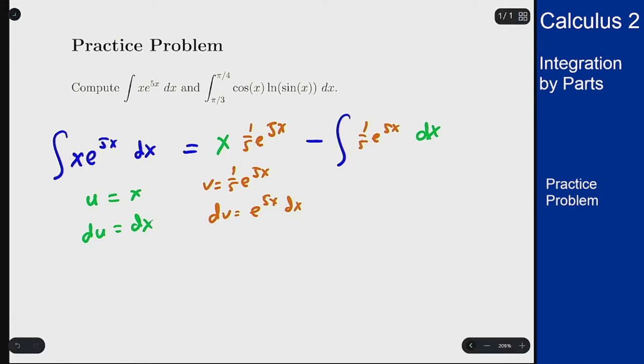So what I'll get out of this is x over 5 e to the 5x minus 1 over 25 e to the 5x. That will get the 1 fifth here and one more from the integration and then plus c. We have an indefinite integral for this problem.